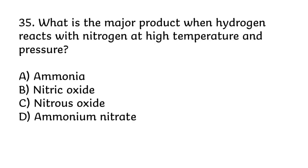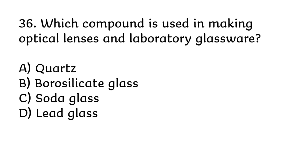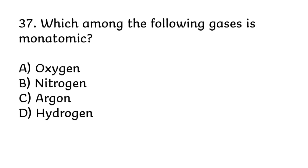What is the major product when hydrogen reacts with nitrogen at high temperature and pressure? Correct answer is A, ammonia. Which compound is used in making optical lenses and laboratory glassware? Correct answer is B, borosilicate glass. Which among the following gases is monatomic? Correct answer is C, argon.